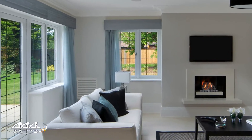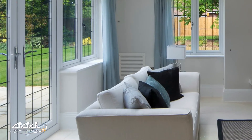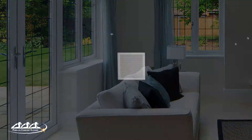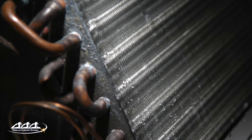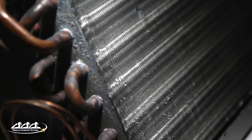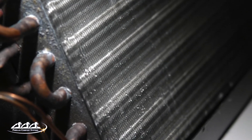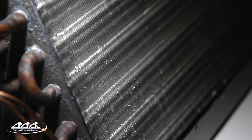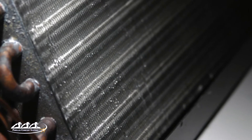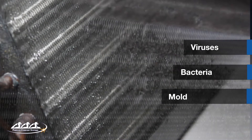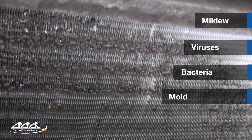A major contributor to poor indoor air quality and reduced HVAC efficiency is the result of the condensation that occurs as air is dehumidified and cooled in the air conditioner. This moisture creates an ideal environment for the growth of mold and other microorganisms on the HVAC system components.